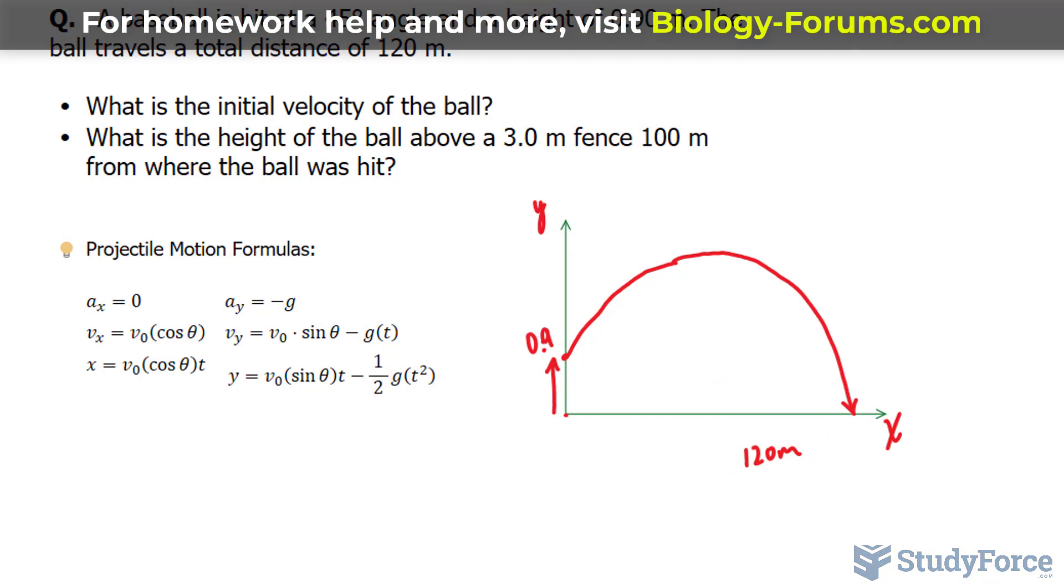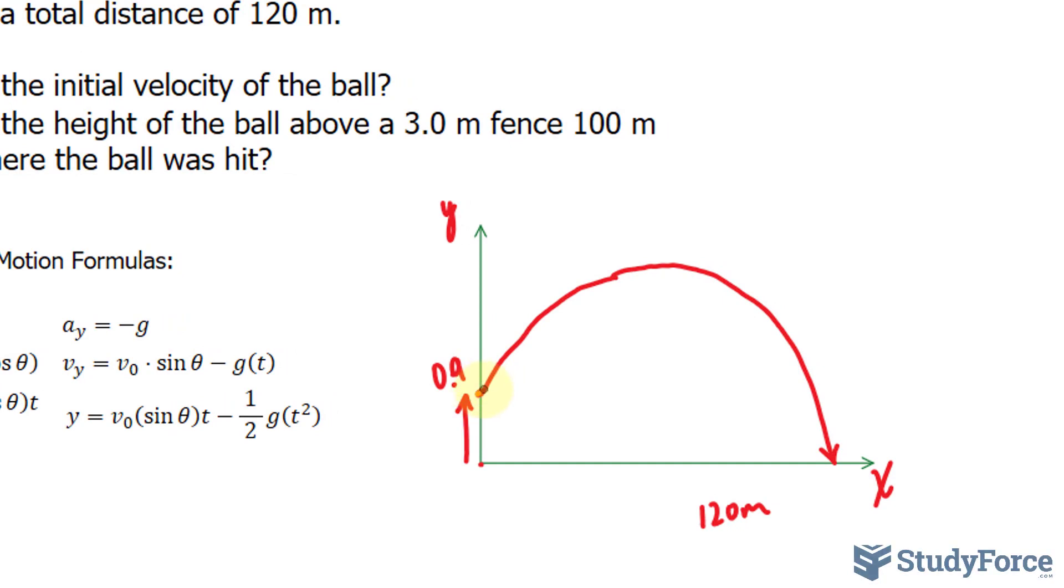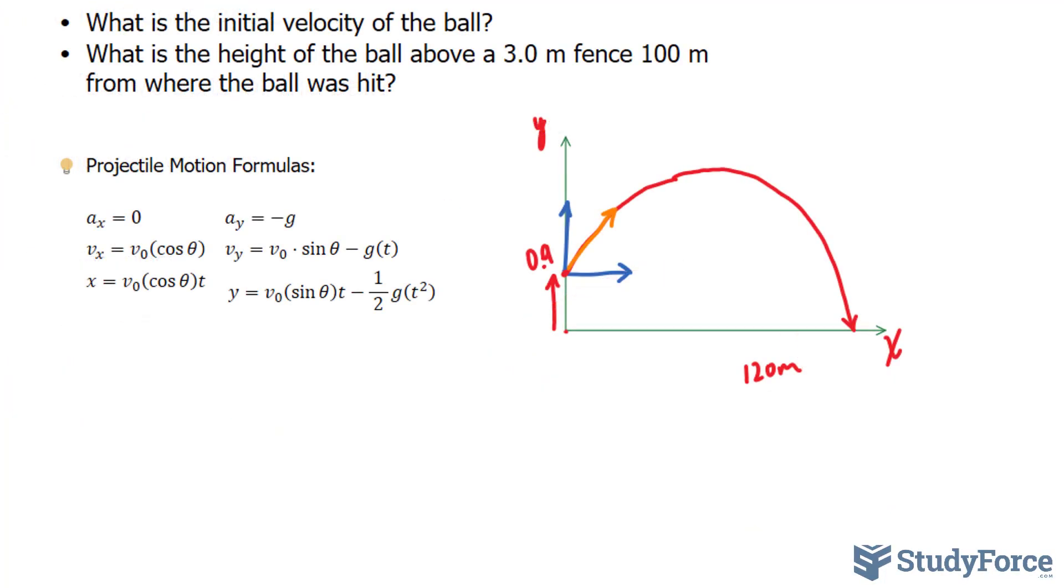We need to find out the initial velocity. So the initial velocity, let's illustrate that with a vector. This vector can be written down into separate vectors. From this point, what I will do is use these formulas to help me find the time, the time it takes to reach 120 meters. Using that, I can then find out the initial velocity using this formula. Now how do I do that? I'll be using this formula and this formula and solving them simultaneously.